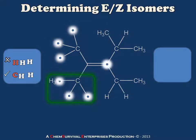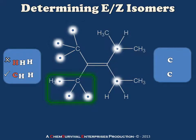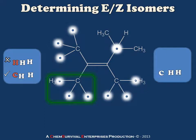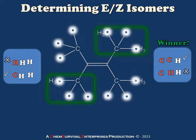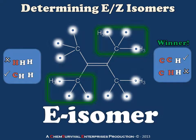Next, I'll do the same exercise for the opposite side of the molecule. Starting with the sp2 carbon and working out, I again find a tie with carbons. Moving another bond out, the lower group gives me C, H, H, while the top group gives me C, C, H. Comparing these lists: carbon matches carbon, but then carbon beats hydrogen — so I've determined a winner, and it's the group on top. Since I've determined that the highest priority groups are on opposite sides of the double bond, I would call this an E isomer.